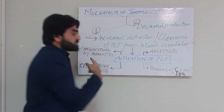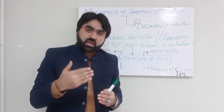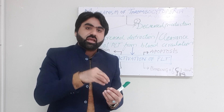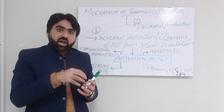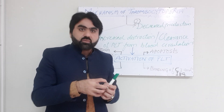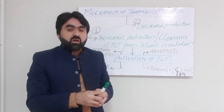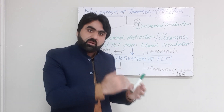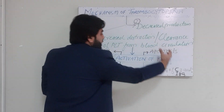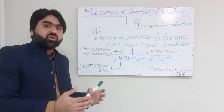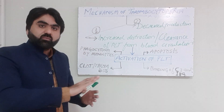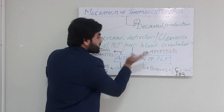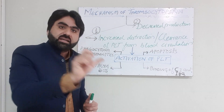Besides these events, dengue virus has the ability to infect platelets, multiply and grow inside them, and these virus-infected platelets are sequestered by the reticuloendothelial system, resulting in clearance of platelets from normal blood circulation. So these are the different events which result in the lysis or clearance of platelets, all resting on the activation of platelets by dengue virus.